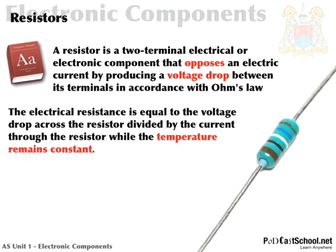The electrical resistance is equal to the voltage drop across the resistor divided by the current through the resistor while the temperature remains constant. That's Ohm's law — nothing new there. All we're saying is that the resistance is proportional to the voltage drop across the resistor. The important thing, highlighted in red, is that the temperature remains constant. You can't expect a different voltage drop across a resistor at different temperatures — it's all at one temperature.